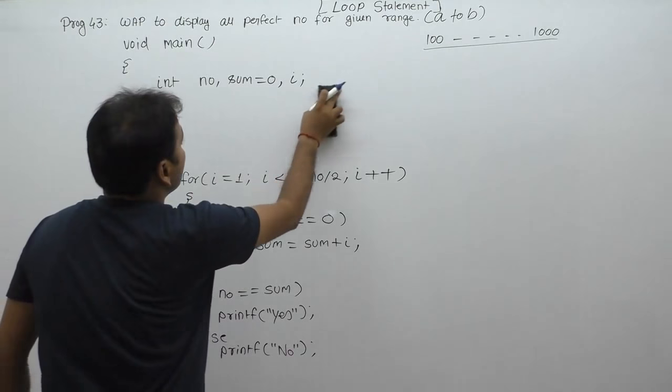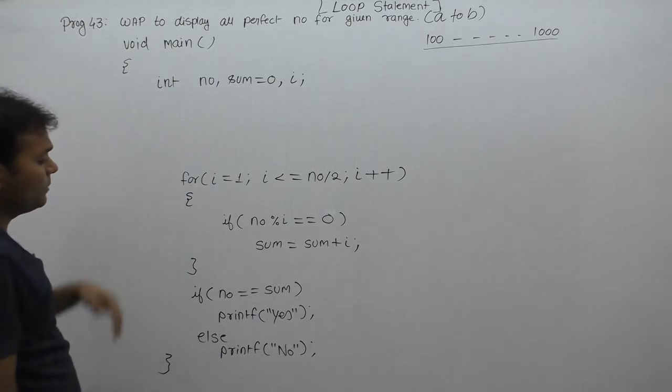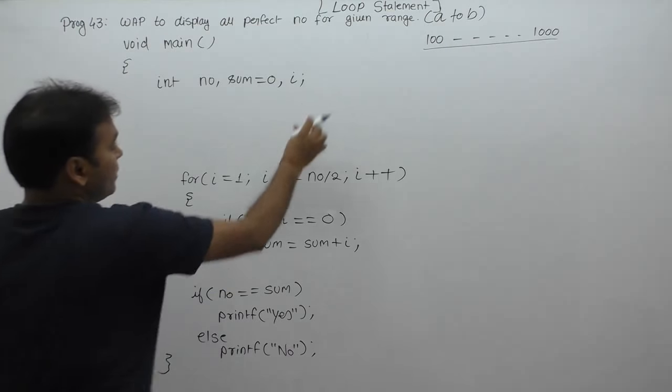Means every time different numbers. In this case, perfect number display all possible. In this case, means changes. Means I have copied same as previous program 42.